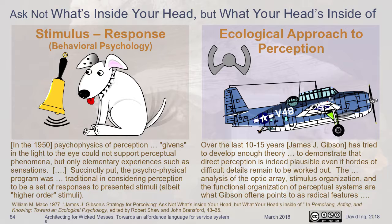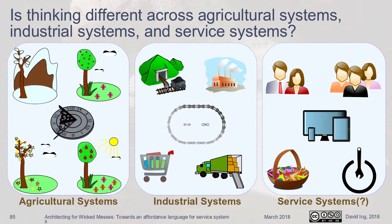Gibson is one of the foundations on which the idea of corresponsion comes out. You want a corresponsion between the pilot and the aircraft carrier happening through the aircraft. The question is: is thinking across agricultural systems, industrial systems, and service systems all the same? The premises behind these are really different. Agricultural systems work off the clock — off natural systems, the sun, the seasons. Industrial systems work on machine time.